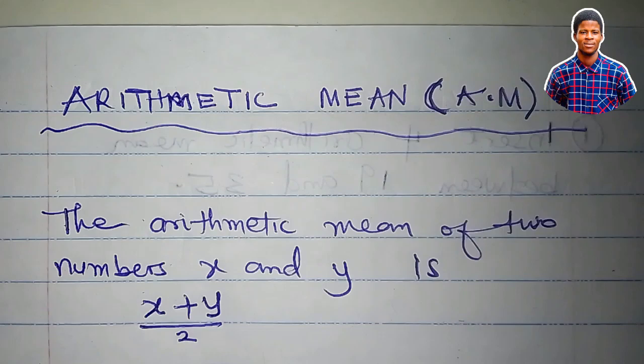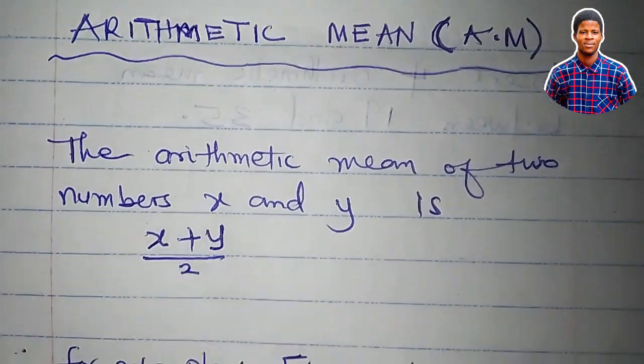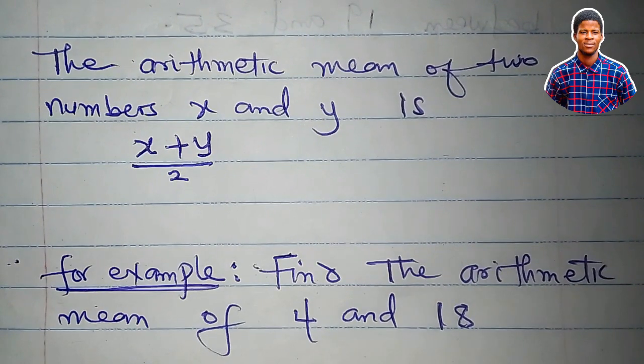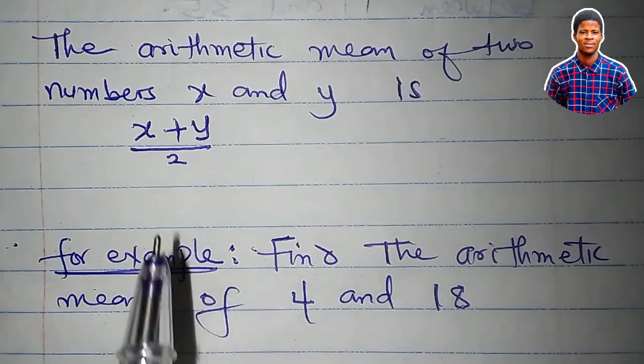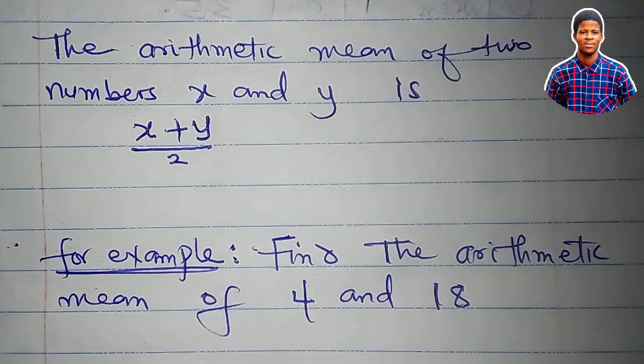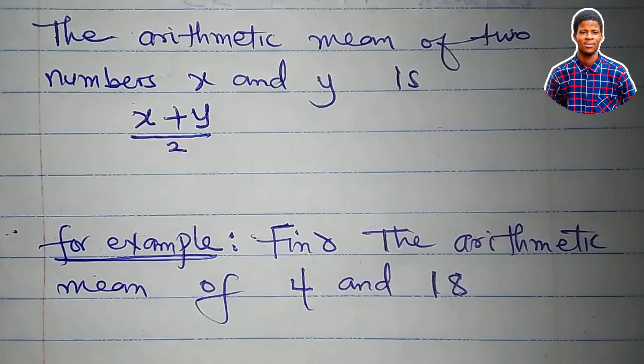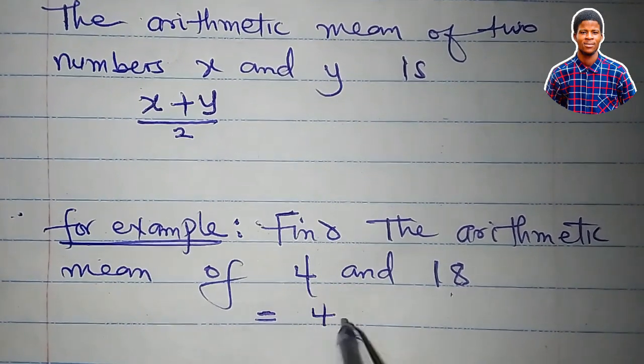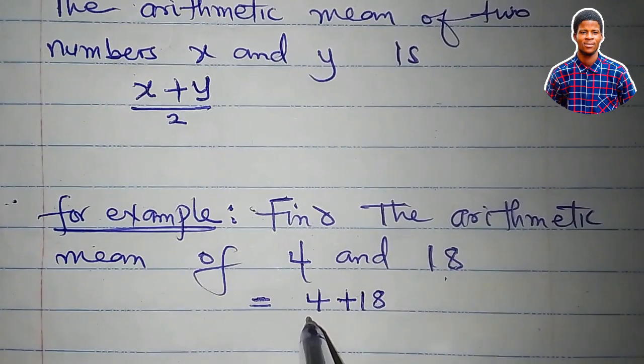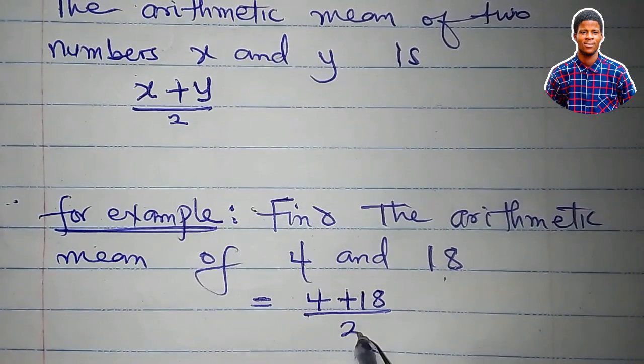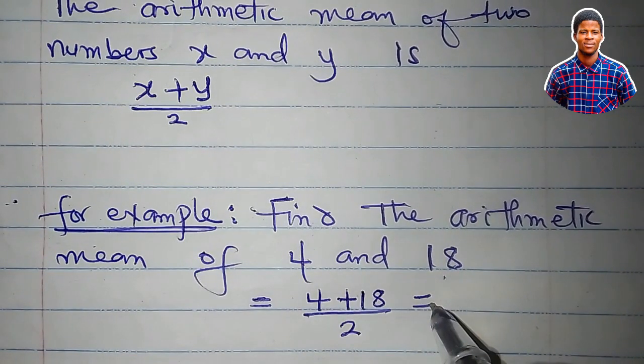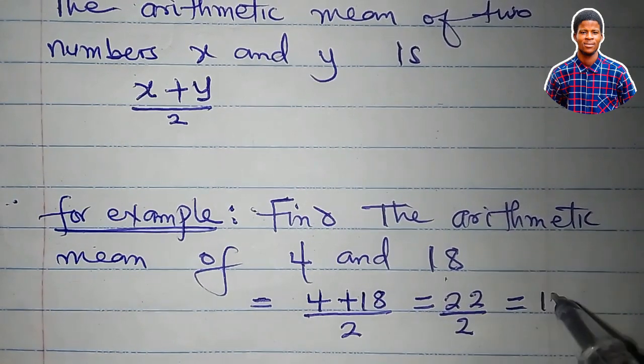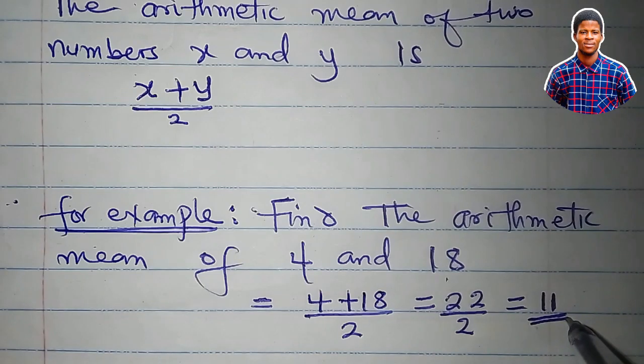I want to apply this now to solve a simple problem. What would be the arithmetic mean of 4 and 18, for example? Going by this arithmetic mean formula, we'll say that the arithmetic mean of 4 and 18 is simply equal to the sum of 4 and 18 divided by the count, which is 2. 4 plus 18 is 22, and that gives us 11. 22 upon 2 is 11.